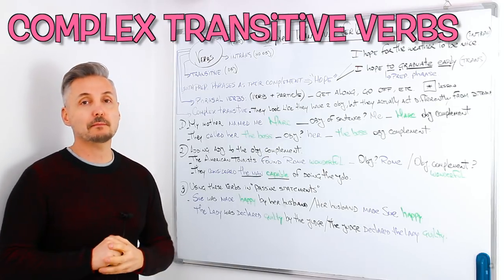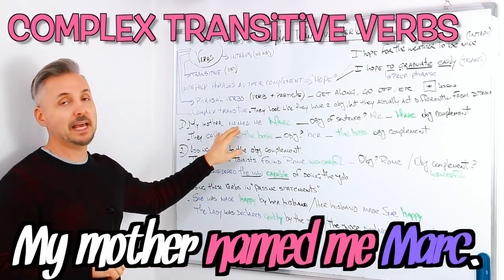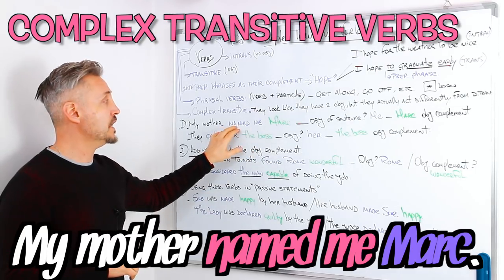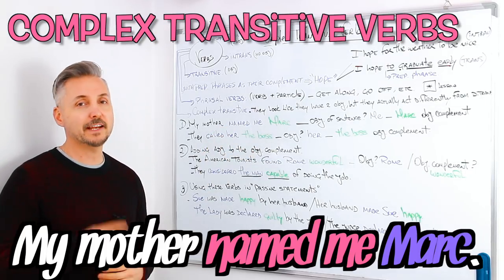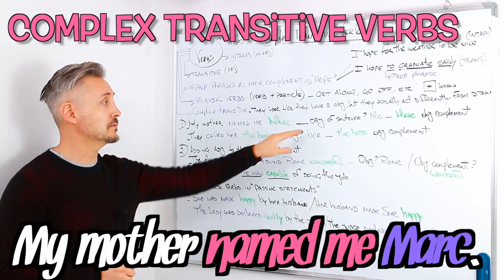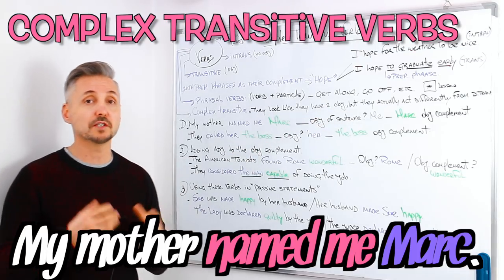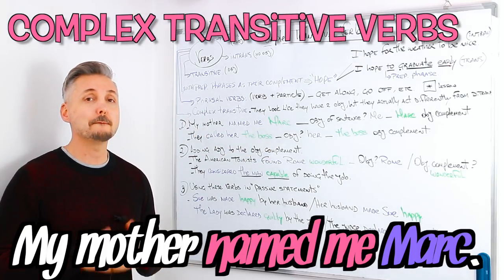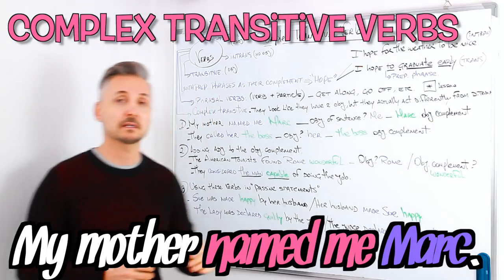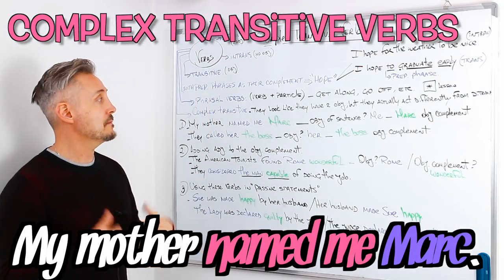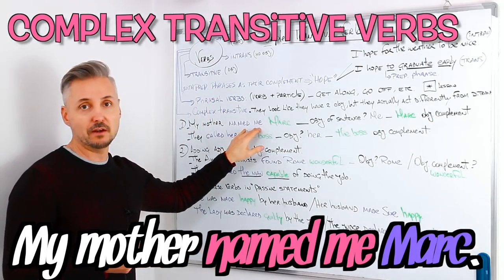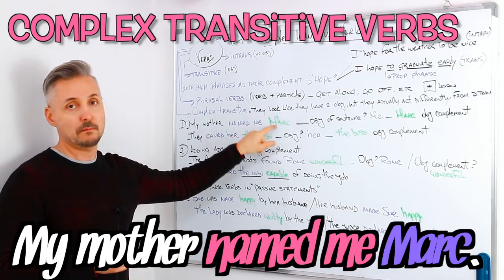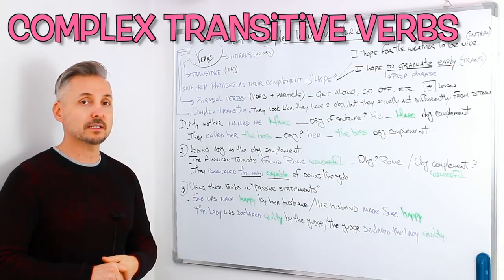My first example: my mother named me Mark. In this case, we have the verb 'name.' What's the object? The object is 'me.' What about 'Mark' then? Mark is the object complement — it's extra to 'me.' So, my mother named who? Me — Mark. Let's look at another example.